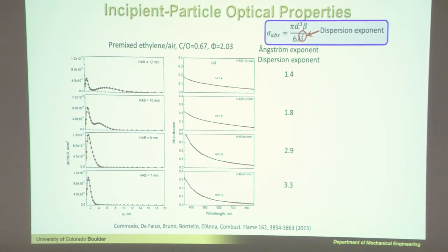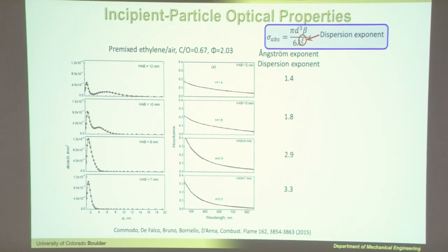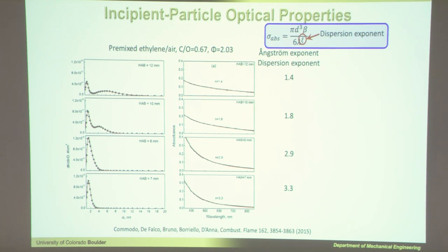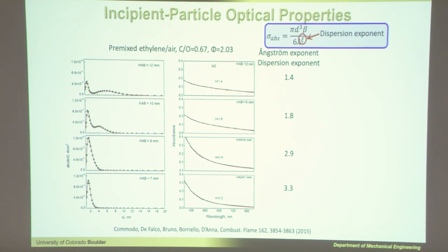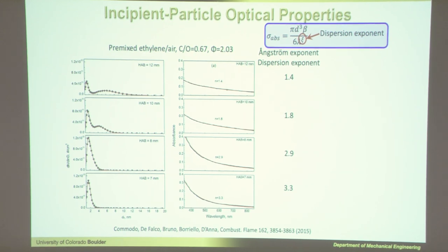This leads to what we call these numbers. In the combustion community we call it the dispersion exponent; in the atmosphere community they call it the Angstrom exponent — it's the same thing. It relates to the absorption cross-section, which is given by some constants times the diameter of the particle cubed, for Rayleigh particles over six times the wavelength of light to this parameter. They call it n in the figure; I tend to use xi. That's the dispersion exponent — wavelength to the n — and it tells you something about how broad the absorption is.